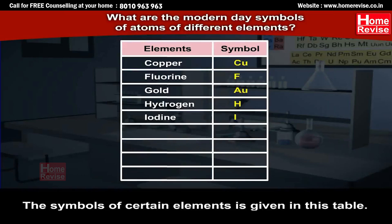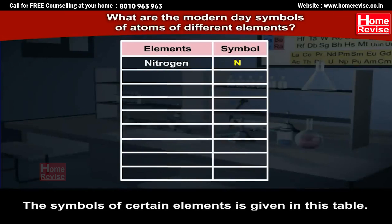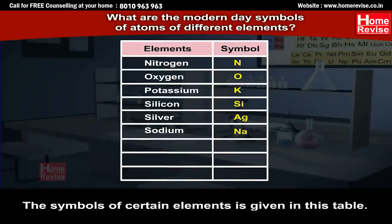Iodine — I, Iron — Fe, Lead — Pb, Magnesium — Mg, Neon — Ne, Nitrogen — N, Oxygen — O, Potassium — K, Silicon — Si, Silver — Ag, Sodium — Na, Sulphur — S, Uranium — U, and Zinc — Zn.